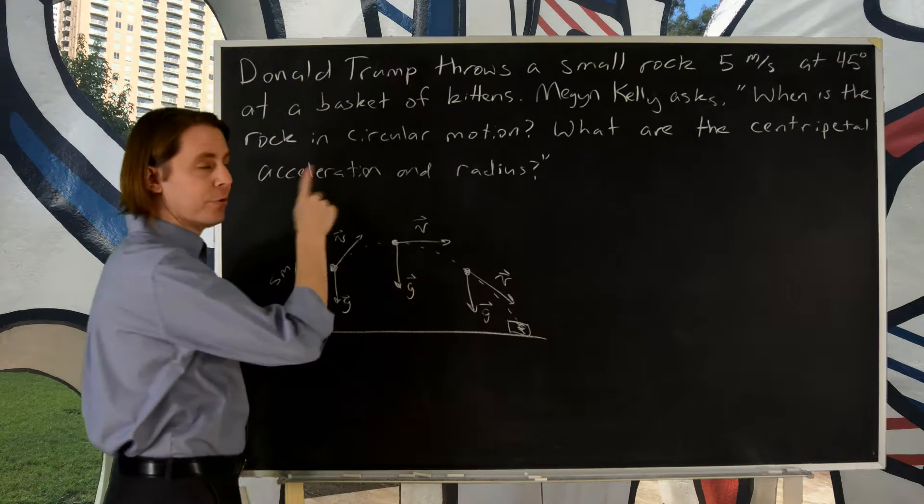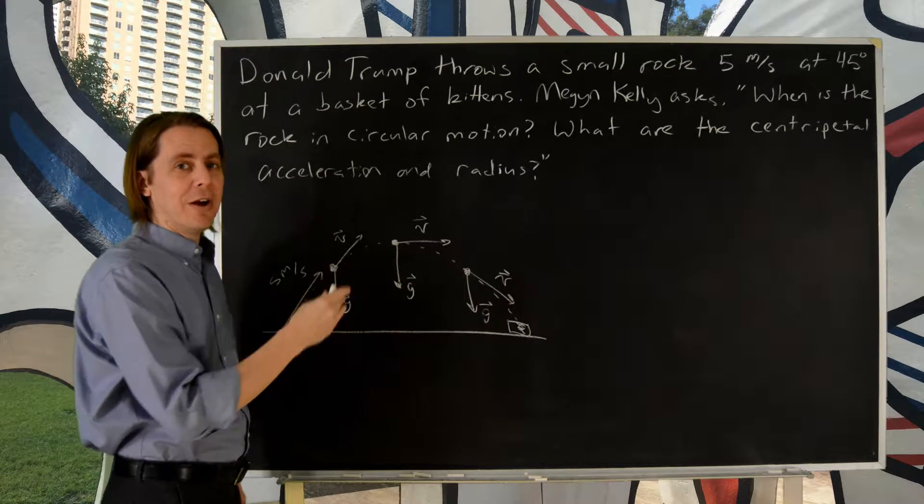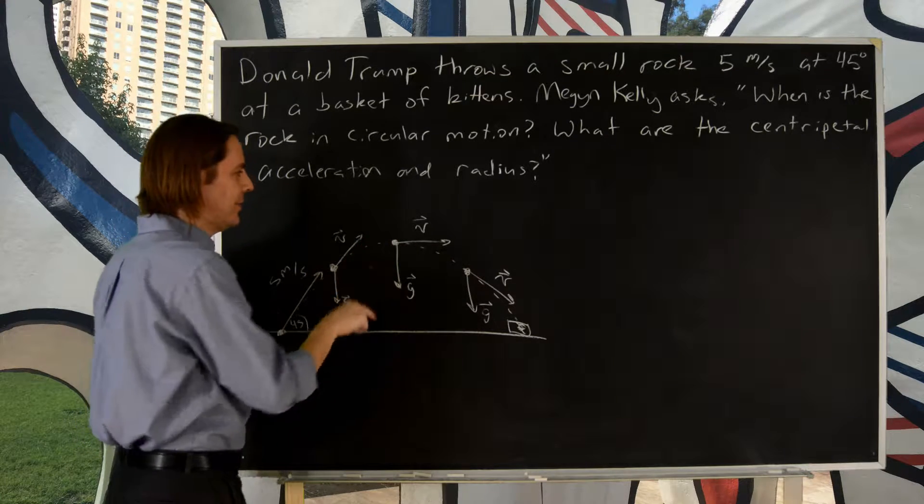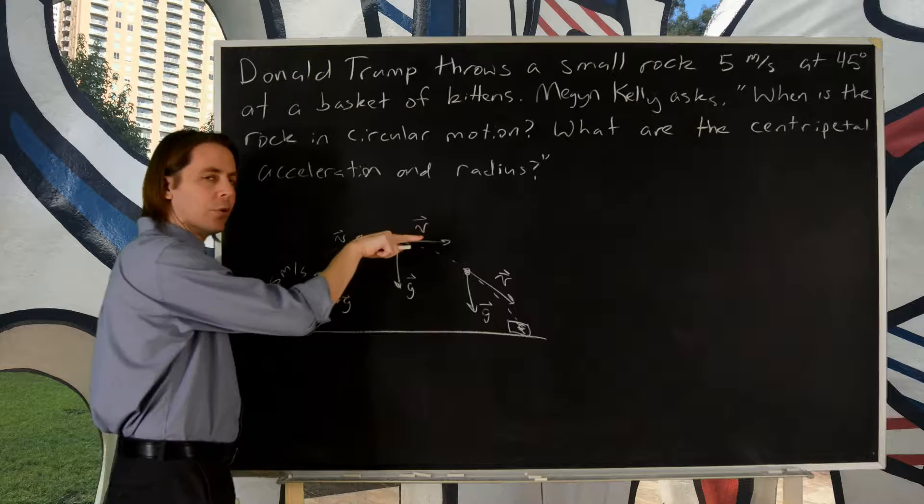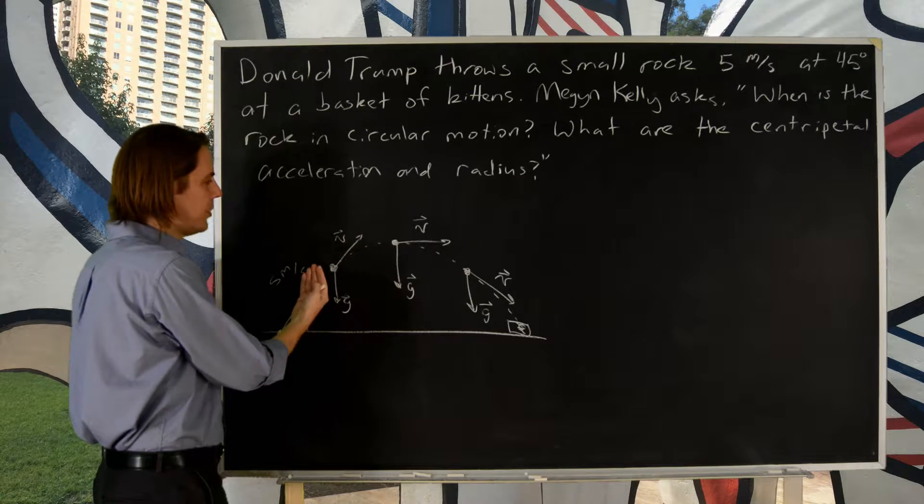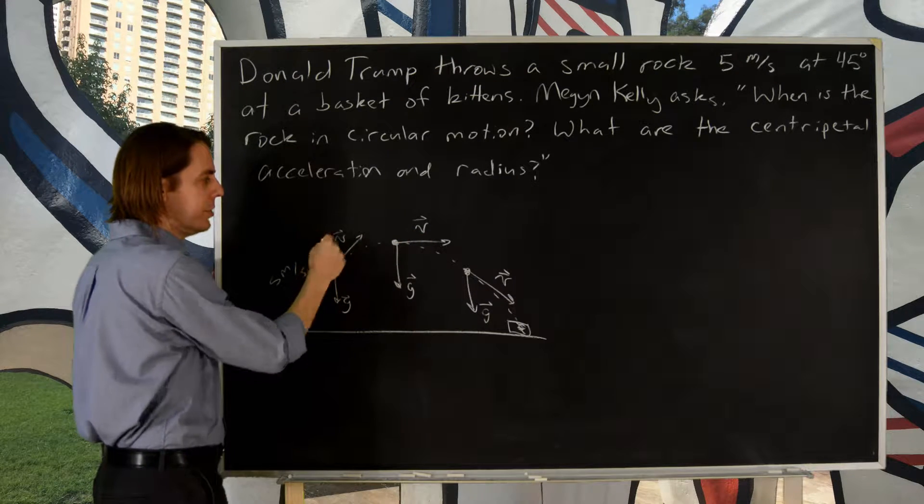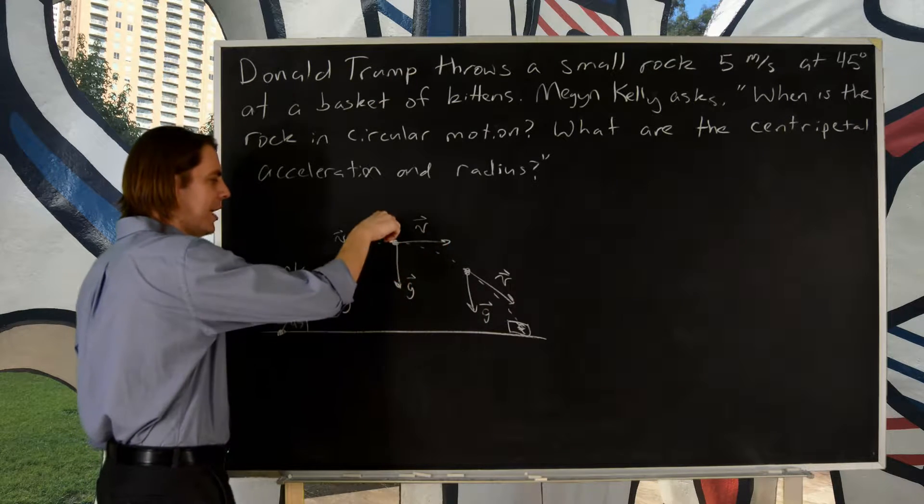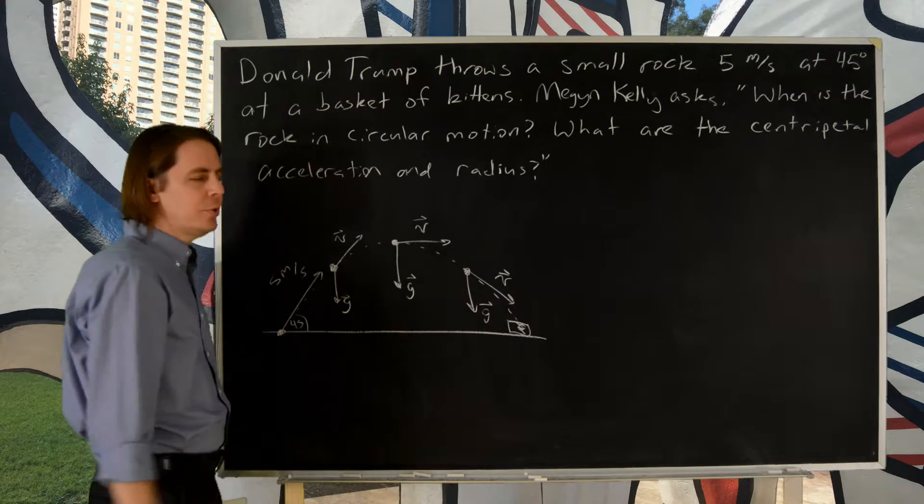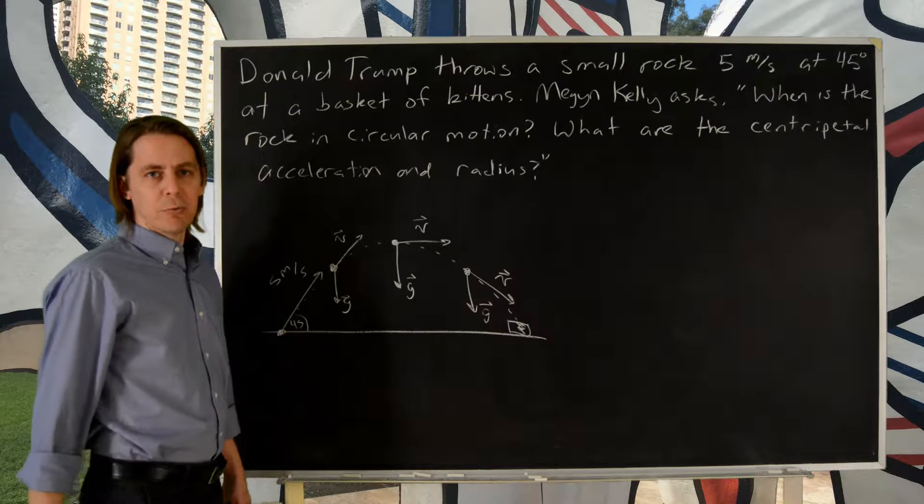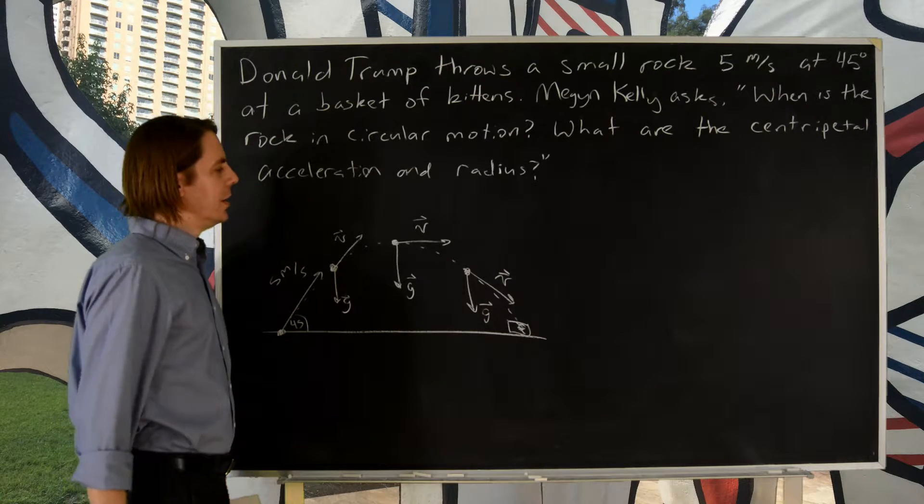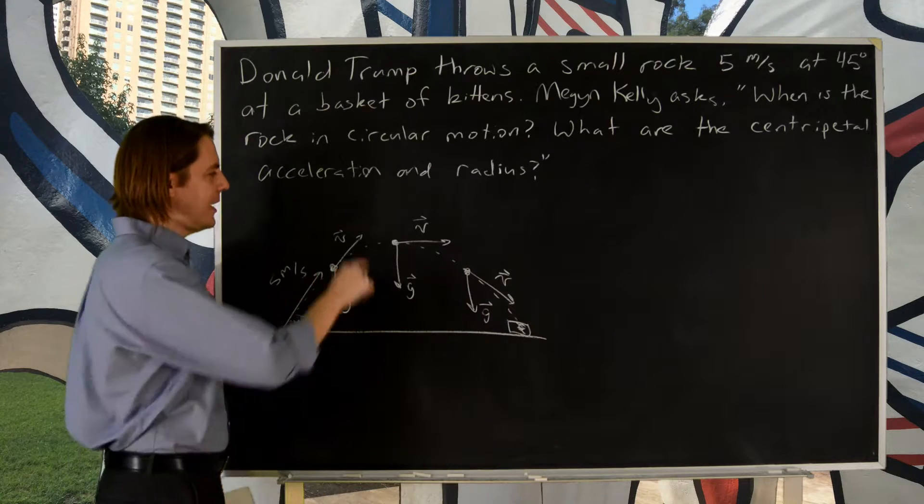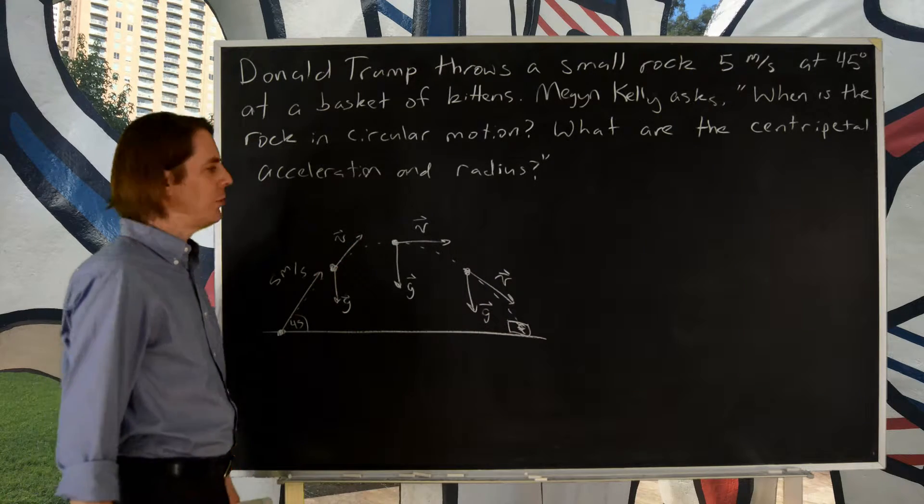Megyn Kelly didn't say it's in uniform circular motion. The question is, at what point in time is it executing circular motion? Technically, at this instant, you do have the velocity horizontal. The vertical components of the velocity have all gone to zero because of the acceleration down. So you have velocity only horizontal, and gravitational acceleration is perpendicular to it. That's the definition of circular motion, when velocity and acceleration are perpendicular. So you could argue that at that moment, it is in circular motion.